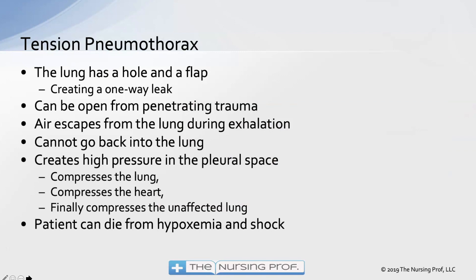A tension pneumothorax is a situation where the lung has a hole and a flap — creating a one-way valve. This one-way valve allows air into the pleural space but does not allow that air to get back out, creating positive pressure. Positive pressure builds up in the pleural space, causing the lung to collapse further. As that positive pressure builds, the lung starts pushing on the mediastinum, compressing the heart, leading to cardiovascular decompensation, and eventually compressing the good lung.